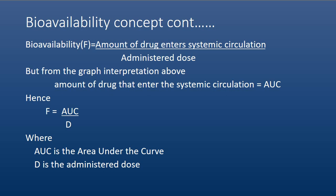Bioavailability, which is designated as F, is mathematically equal to the amount of drug entering systemic circulation over the administered dose. As we have seen from the graph, the amount of drug that enters systemic circulation — the amount that is available in the systemic circulation — is equal to the AUC, the area under the curve. Hence, bioavailability F equals AUC divided by D, where AUC is the area under the curve and D is the administered dose.